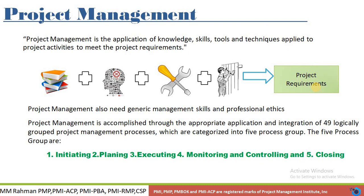Project management consists of 49 logically grouped project management processes that are interlinked with each other. These 49 processes are organized into five process groups: Initiating, Planning, Executing, Monitoring and Controlling, and Closing.